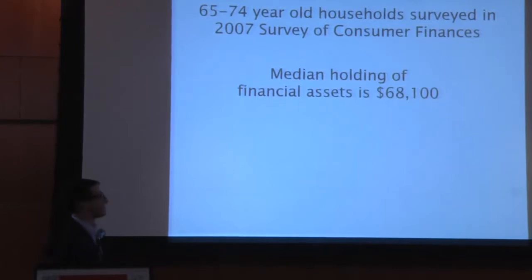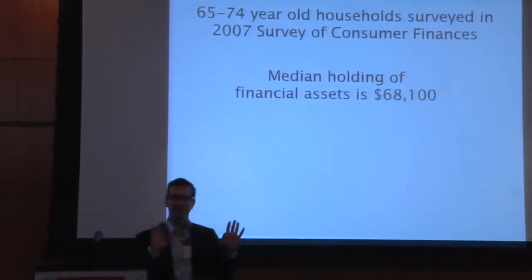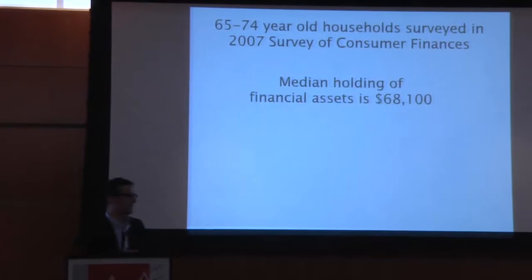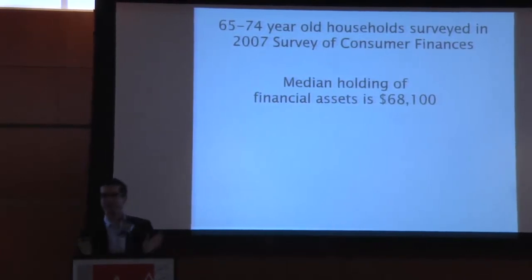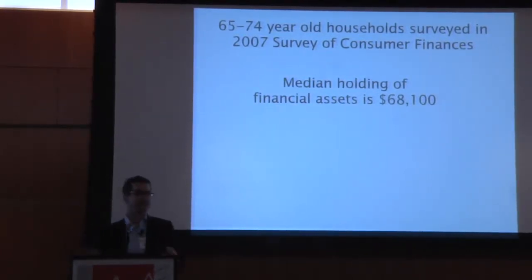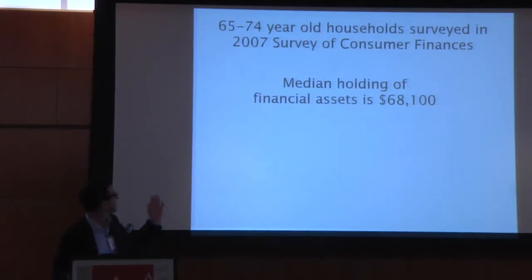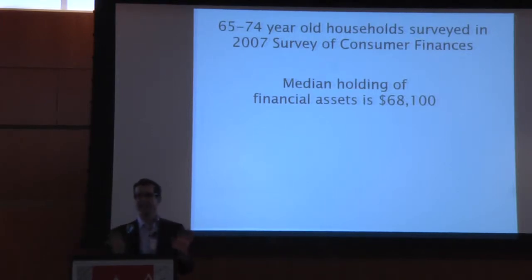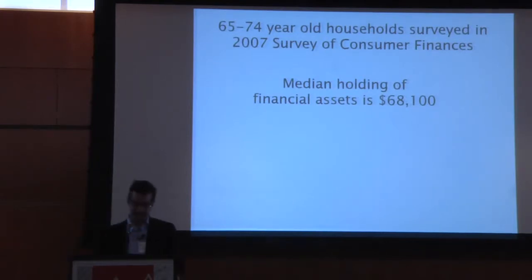Let me begin with just two facts that will motivate the paper I'll ultimately get to. First, US households do remarkably little saving in liquid financial assets. When you look at households in the 65 to 74 age group and look at their median financial wealth — including everything: IRAs, 401Ks, checking accounts, savings accounts, stocks, bonds — it's $68,000.